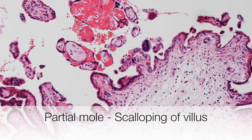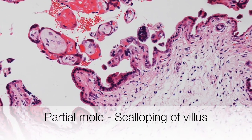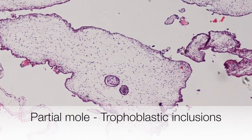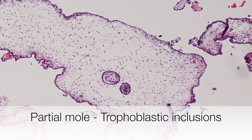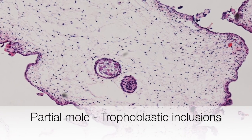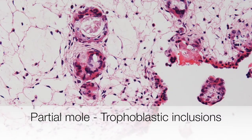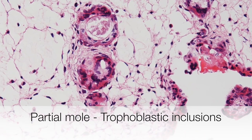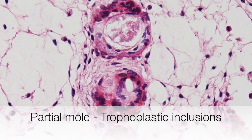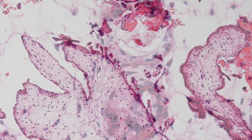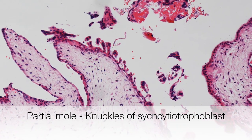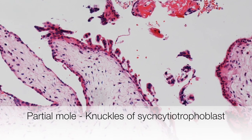This hydropic villus shows a scalloped outline. This villus shows trophoblastic inclusions. And finally, this hydropic villus shows knuckles of hyperplastic syncytiotrophoblast.